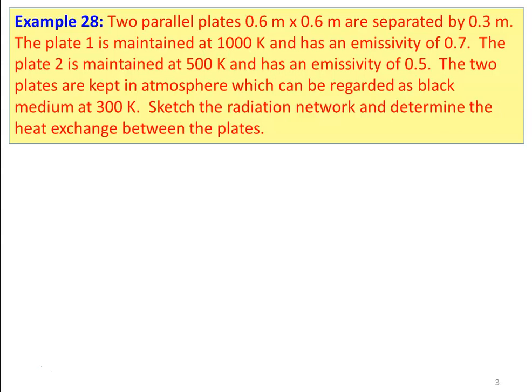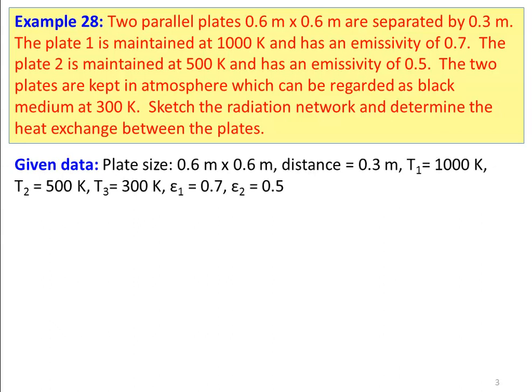We take example number 28. Two parallel plates, 0.6 m by 0.6 m, are separated by 0.3 m. Plate 1 is maintained at 1000 K and has an emissivity of 0.7. Plate 2 is maintained at 500 K and has an emissivity of 0.5. The two plates are kept in an atmosphere regarded as a black medium at 300 K. The given data: plate size is 0.6 m × 0.6 m, distance between plates is 0.3 m, T1 = 1000 K, T2 = 500 K, T3 = 300 K, ε1 = 0.7, ε2 = 0.5.